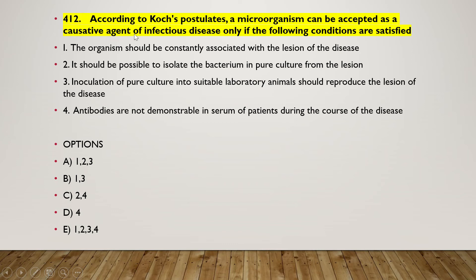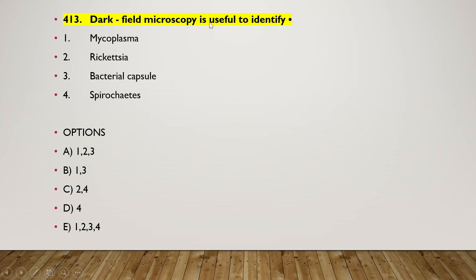Next question: according to Koch's postulates, a microorganism can be accepted as a causative agent of infectious disease only if — (1) the organism should be constantly associated with lesions of the disease, (2) it should be possible to isolate the bacterium in pure culture from the lesion, (3) inoculation of pure culture into suitable laboratory animals should reproduce the lesions, (4) antibodies are demonstrable in serum of patient during the course of the disease. The right answer is option A — one, two, and three is the correct answer.